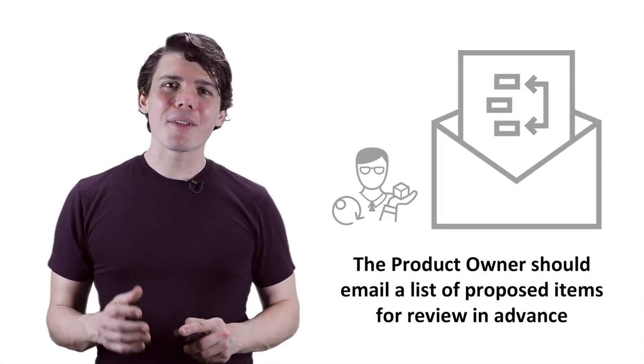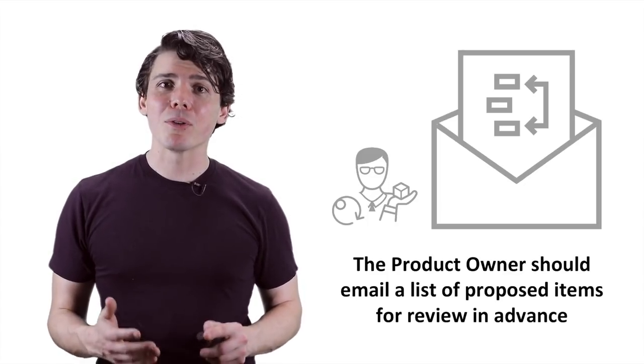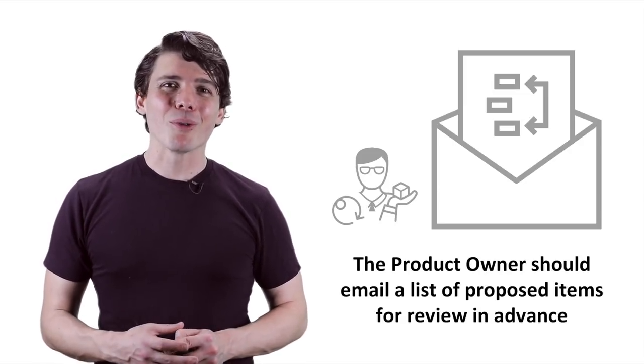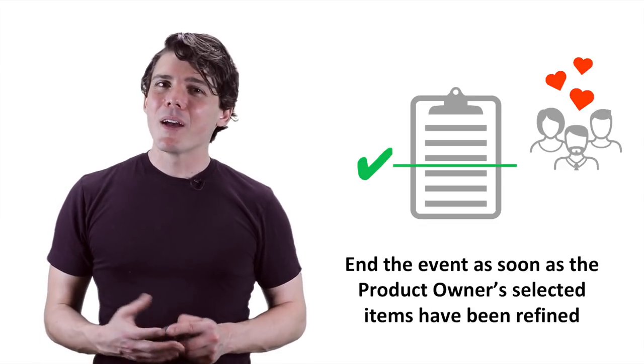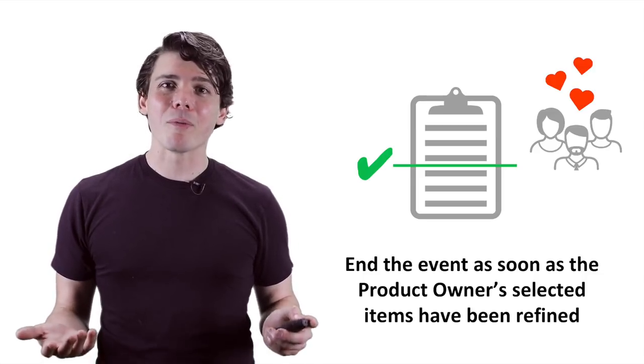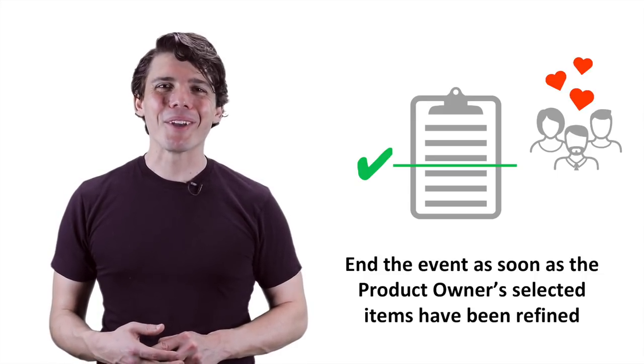Before you start, I suggest having the product owner communicate a proposed list of items for refinement to the team at least a few hours before the event. This gives the team a chance to look at the stories earlier. If the product owner and scrum master are willing to conclude the event when all of these items have been refined, rather than move on to new topics, it can also be highly motivating for the team.